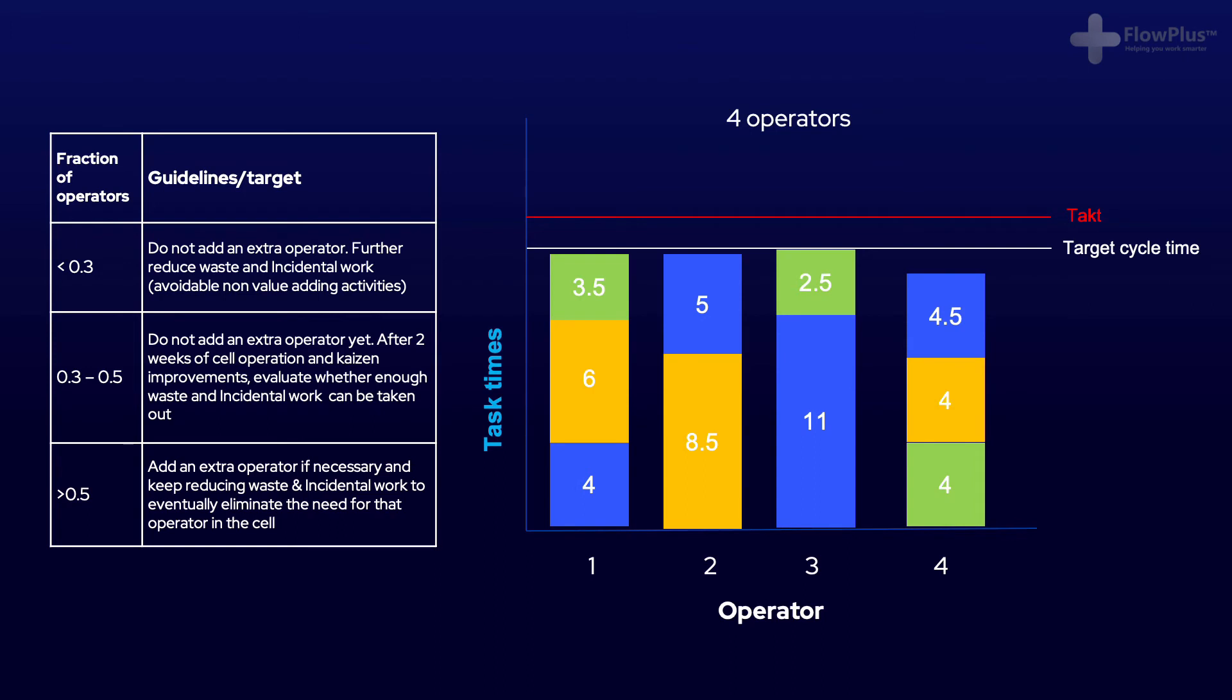Once the process has been split into different tasks, we need to try and distribute the work across each operator, starting by trying to get each operator as close to the target cycle time as possible. From this example, we can see that the first three operators closely match the target cycle time, but the fourth operator has a bit less work content.